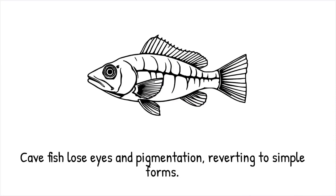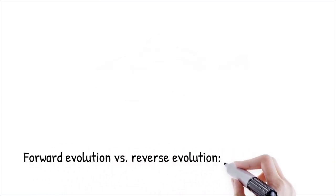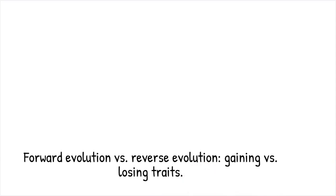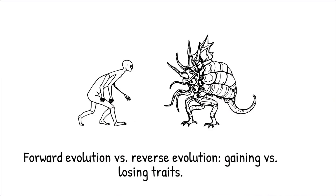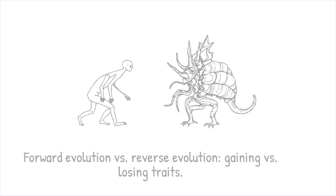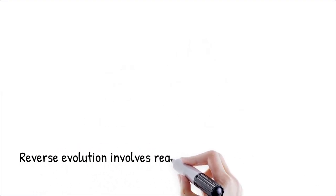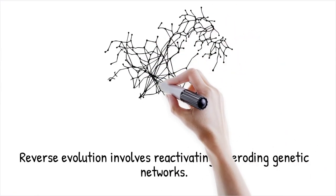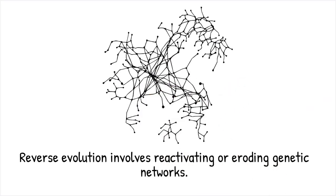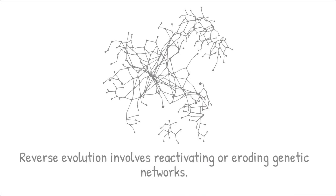It is like a modern car being stripped of its advanced electronics and reverted to a basic engine-only design. Classical forward evolution describes the emergence of novel traits via mutation, selection, and drift, driving increased adaptation and diversification. Reverse evolution occurs when species lose complex characters and re-express simpler ancestral traits. Unlike mere trait loss, reverse evolution often involves the reactivation or further erosion of genetic networks once thought permanently altered, highlighting that evolution can retrace steps under shifting selective pressures.